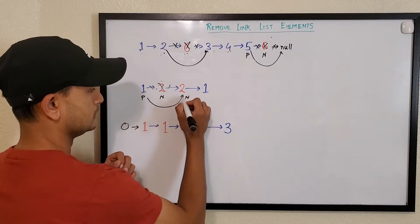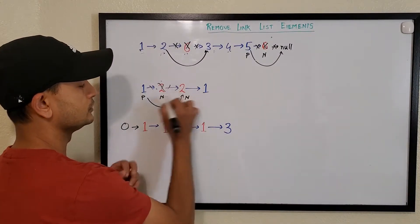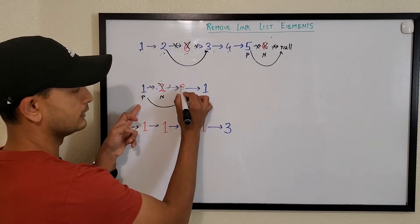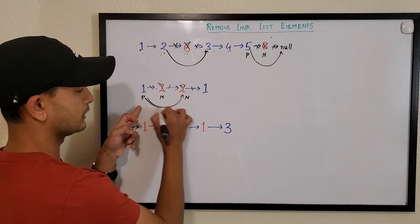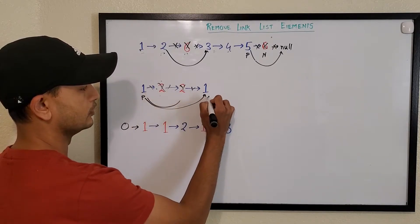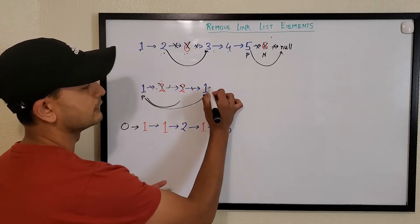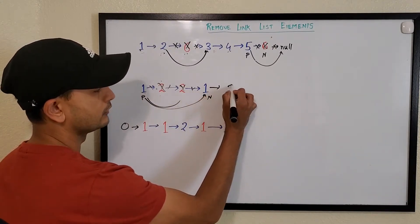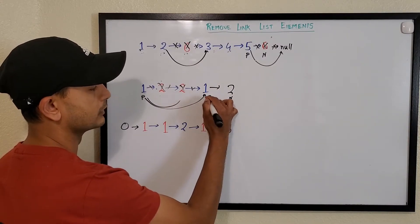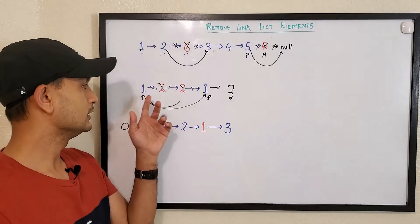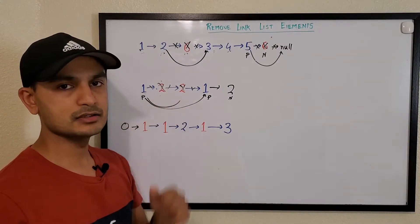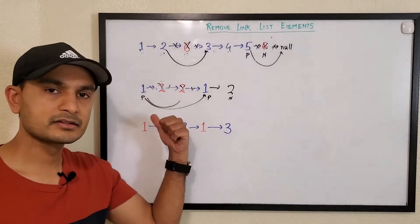For adjacent nodes with the same value to remove: previous stays on the good node while node moves through consecutive matching nodes. Each time, previous.next is updated to node.next until node reaches a good node. That's how we handle two or more adjacent nodes that all need to be removed.